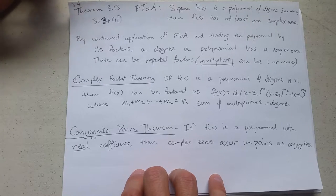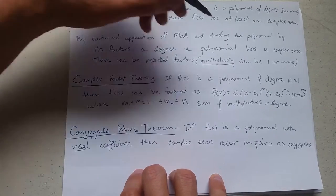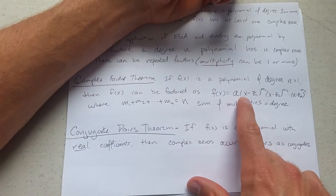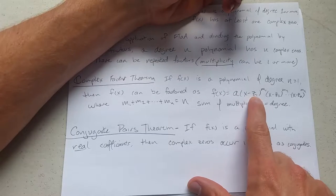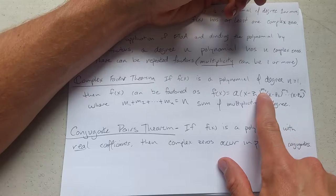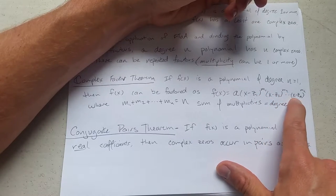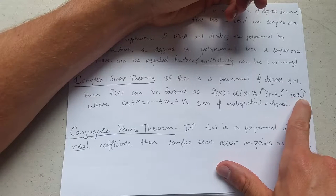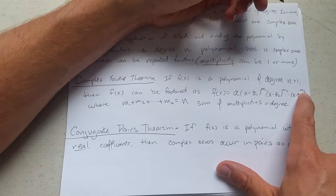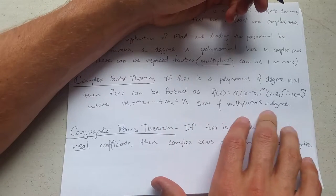Complex factor theorem: if we have a polynomial of degree 1 or more, then you can factor it all the way. What does all the way mean? There is a real number factor out front, right here. This is x minus the first possibly complex zero to a multiplicity, times x minus the second zero to another multiplicity, times, times, times, all the way down until you get to the nth factor to the mnth power, which would be the multiplicity. If you add all these up, you should get the sum of the multiplicities equals the degree.